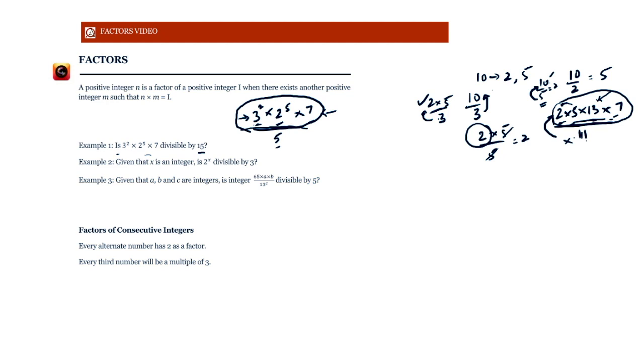So this is not divisible by 15 because this number is not divisible by 5. Even though it is divisible by 3, that's all right, but it is not divisible by 5. And to be divisible by 15, that is 3 into 5, it needs to be divisible by 3 as well as 5. 3 fine, we'll cancel off, but there is no 5 here. That is why the answer here is no. This is not divisible by 15.